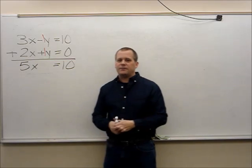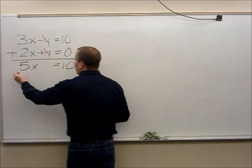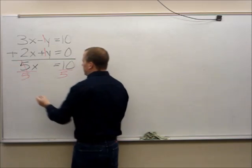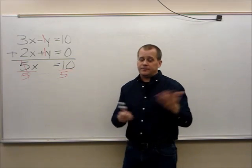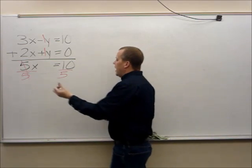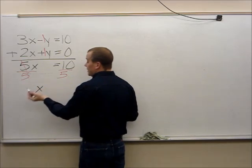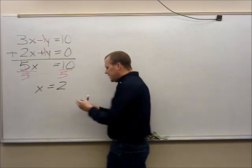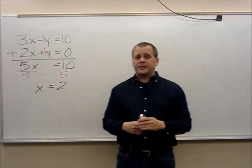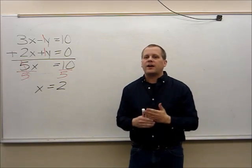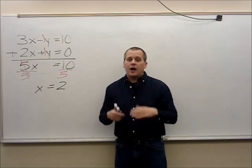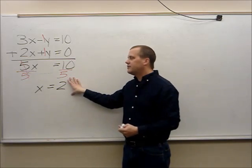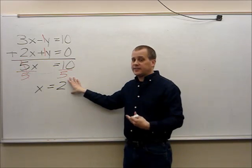The number in front of x is 5, so I need to divide both sides by 5. When I divide both sides by 5, 5 divided by 5 is 1 — x is equal to 10 divided by 5, which is 2. Now I'm not done yet, because keep in mind I'm trying to find the point of intersection — I'm trying to figure out where those two lines will cross. I've got my answer of x equals 2.